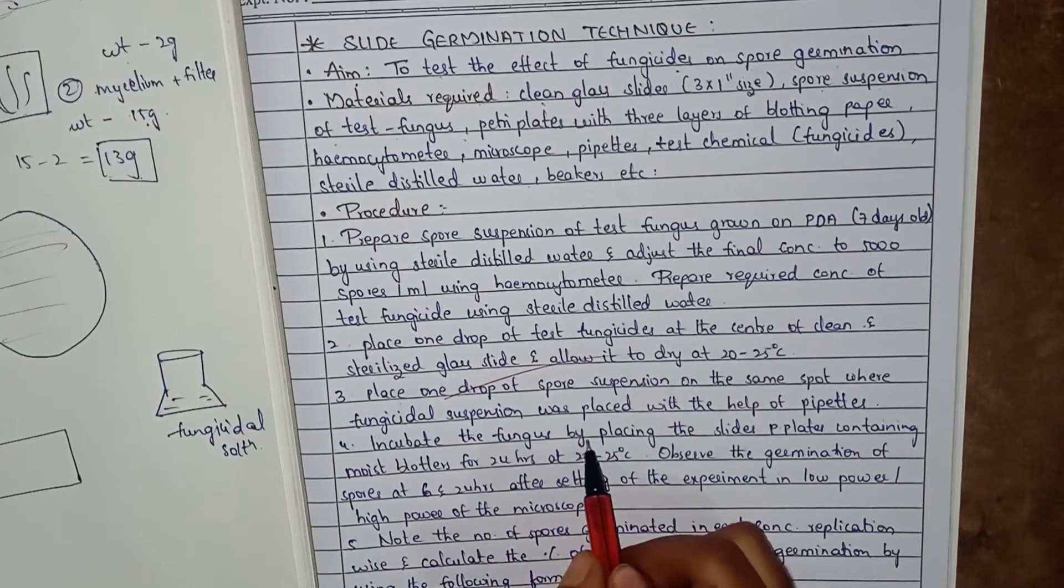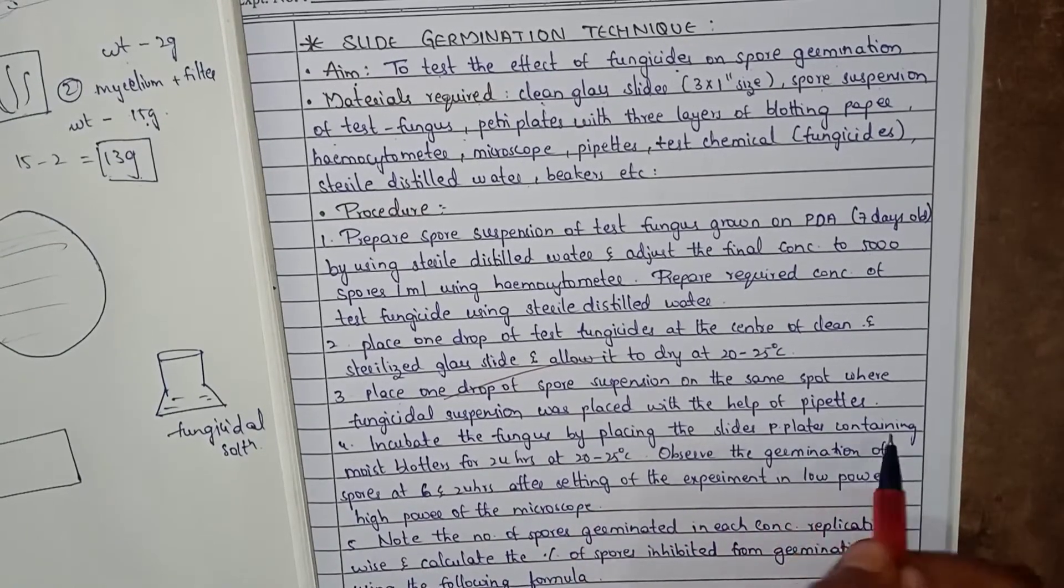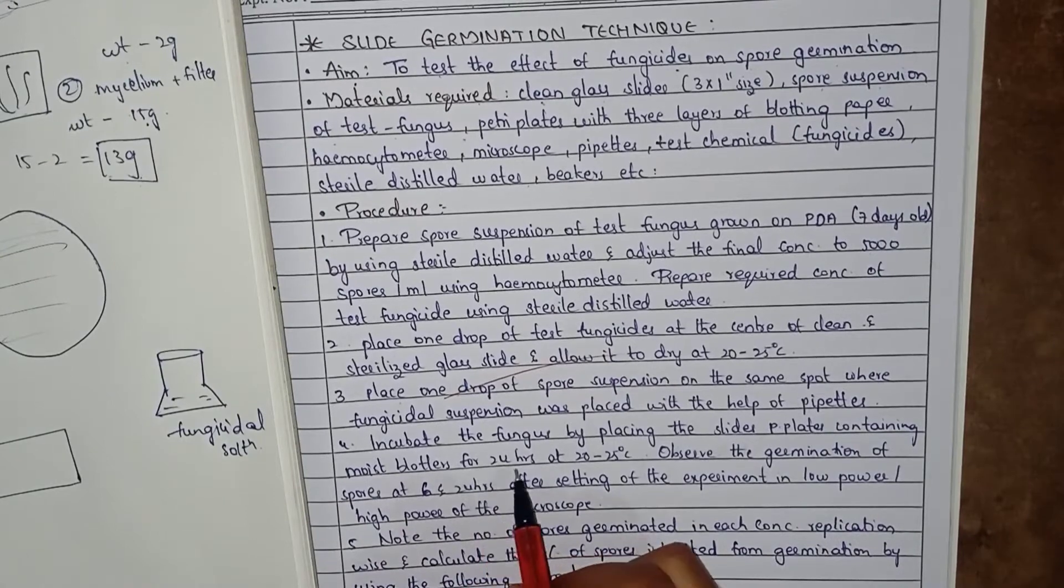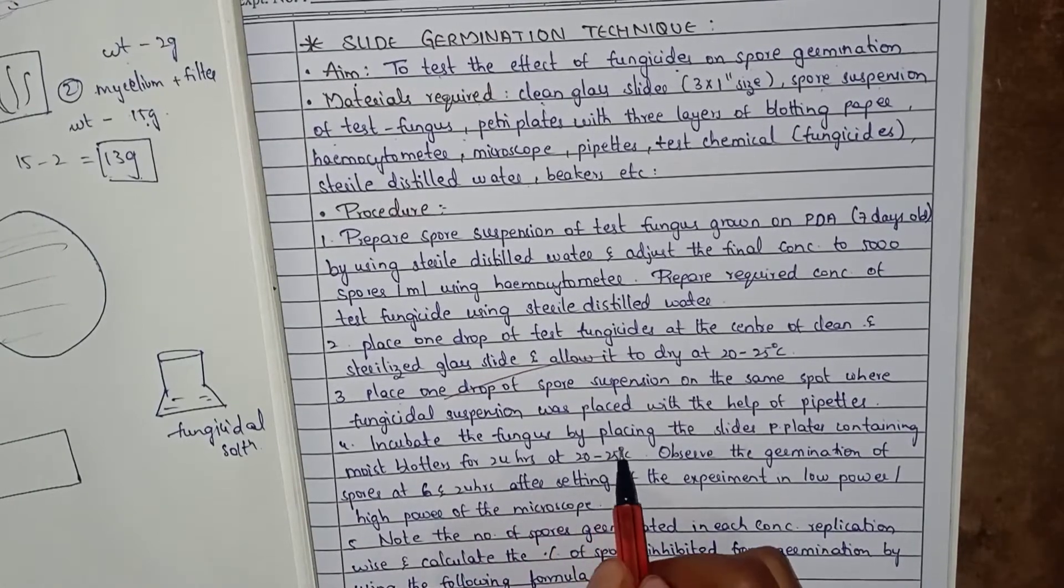Incubate the fungus by placing the petri plates containing moist blotters for 24 hours at 20 to 25 degrees Celsius.